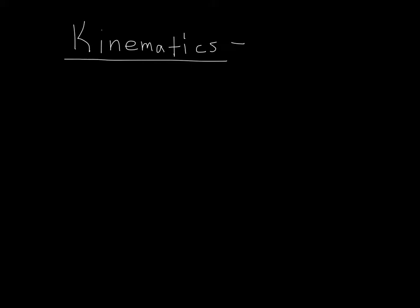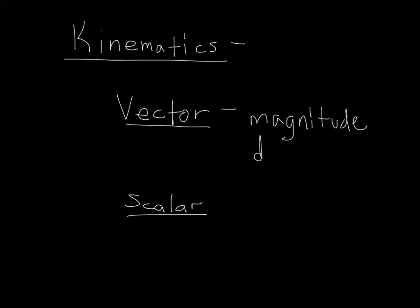The important thing to note mathematically is this concept of something called a vector and something called a scalar. A vector is described by something that has a magnitude, so a certain size, as well as a direction. Vectors have a magnitude and they have a direction.